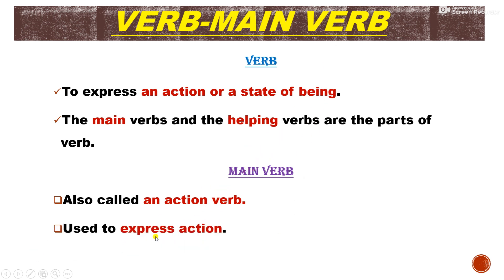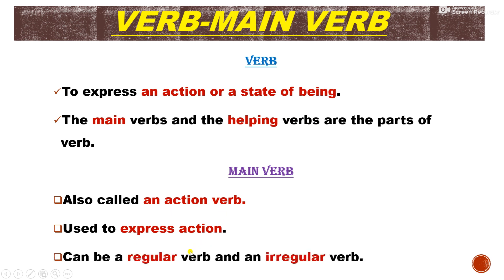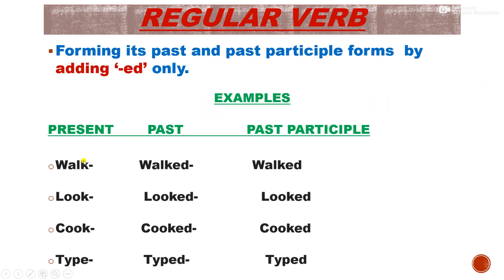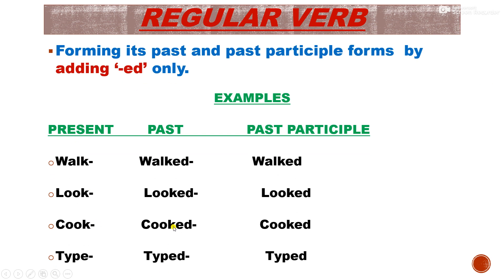So what is the main verb? The main verb expresses action, so it is called an action verb. Main verbs are regular and irregular. To identify whether a verb is regular or irregular, we look at three forms: present, past, and past participle. To form past and past participle of a regular verb, we just add -ed.